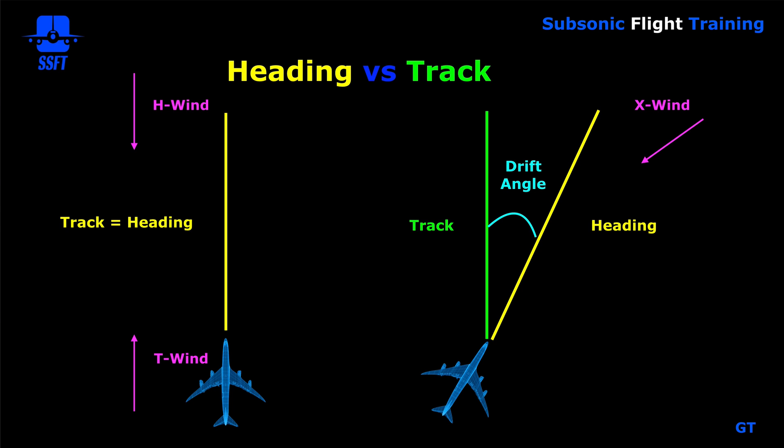The difference between heading and track: if you have a direct headwind or tailwind, the track and the heading will be exactly the same — the way the airplane is pointing is the way you'll be flying. If you have any sort of crosswind, the way the airplane is pointing will be different than the way it is actually flying. The heading would be shown in yellow, but the actual track of the airplane would be shown in green. The difference between the heading and the track is the drift angle.